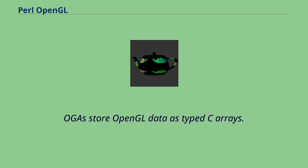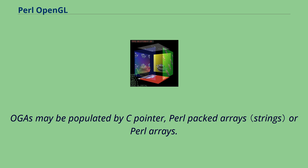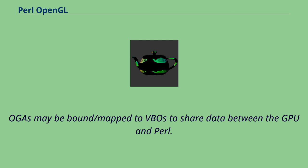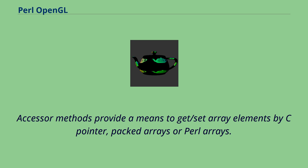OGAs store OpenGL data as type C arrays. OGAs may be populated by C-pointer, Perl-packed arrays, or Perl arrays. OGAs may be bound or mapped to VBOs to share data between the GPU and Perl. Accessor methods provide a means to get or set array elements by C-pointer, packed arrays, or Perl arrays.